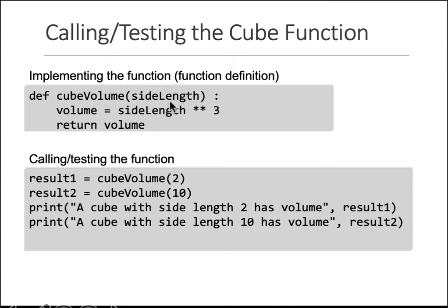You input the side length into the cube_volume box and get the volume out; inside the box is what's happening. To call or test the function: remember Python is top-down, so you define your function first at the top of your program. Then below, you define a variable result_one as the return value of calling cube_volume with a given argument.